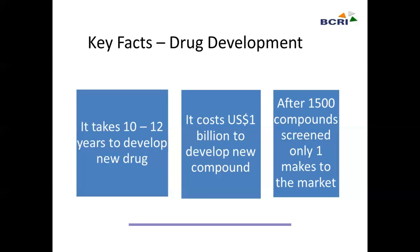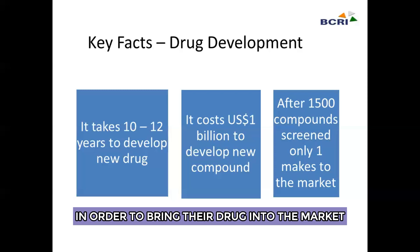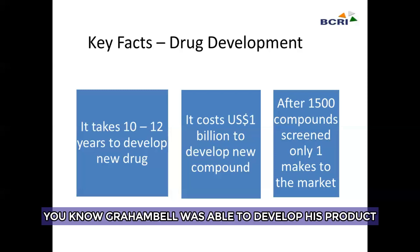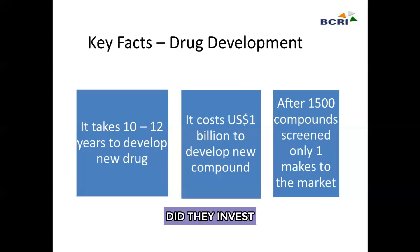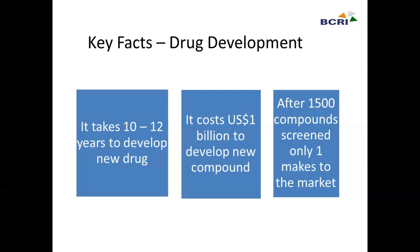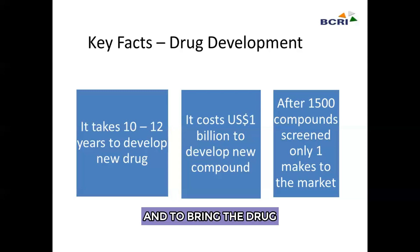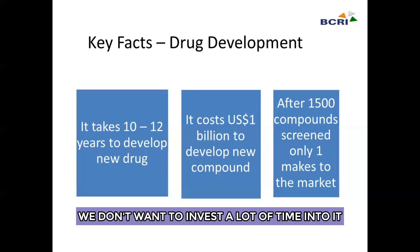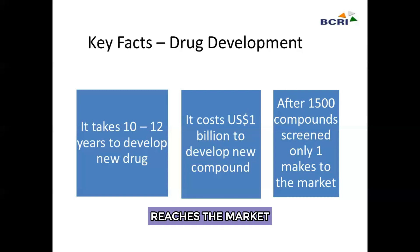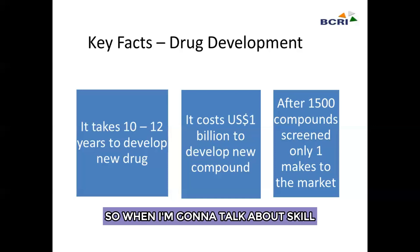To develop and launch a drug into the market, you require a lot of regulations and rules to follow. It is not a simple task. Like Einstein and Graham Bell who invested their lifetimes creating novel products, pharmaceutical companies don't have that luxury. That's why they need a lot of manpower to work on their drug and bring it to market as fast as possible. Revenue is only seen when the drug reaches the market, so they need skilled individuals.